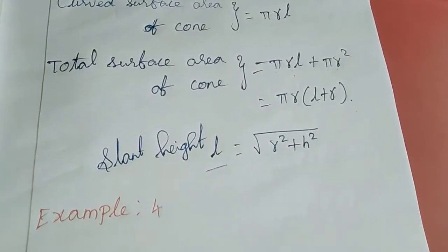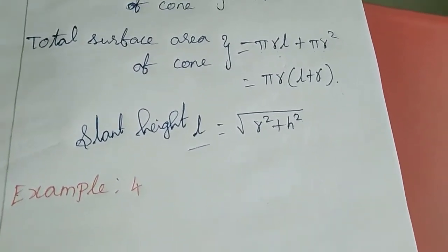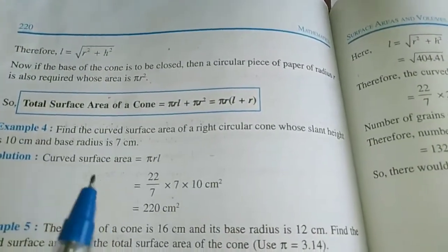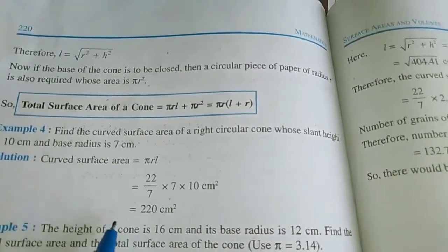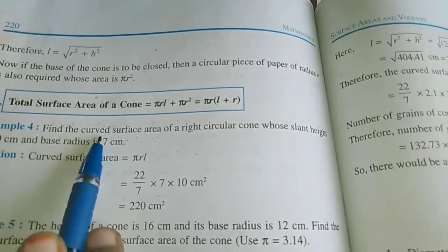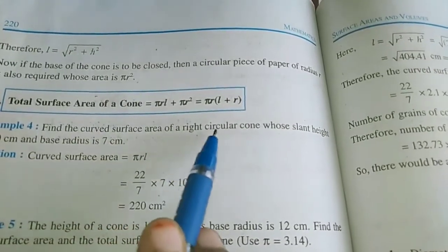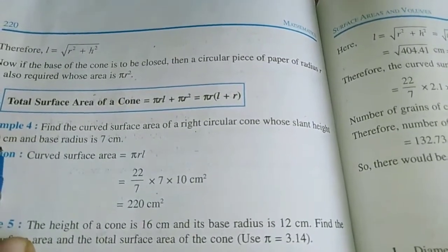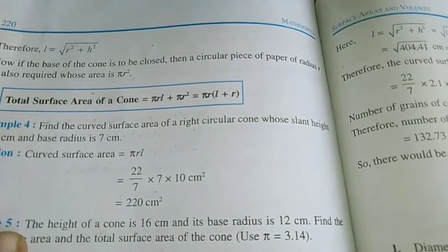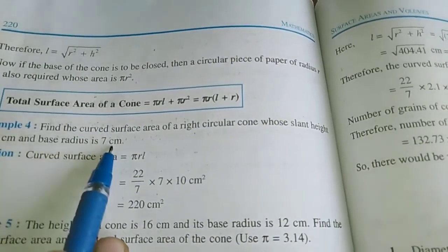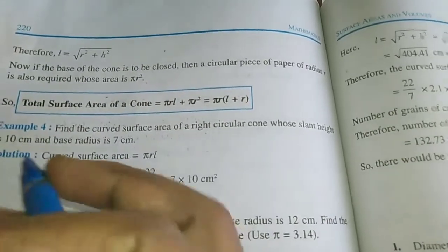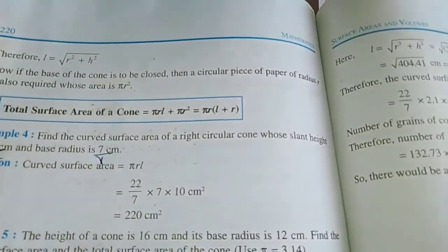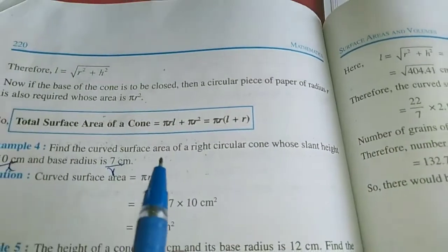Now we will move to example sums, example 4 first. Find the curved surface area of a right circular cone whose slant height is 10 centimetres. Slant height means this is the l value, and base radius r is 7 centimetres. That is l is 10 centimetres and r is 7 centimetres. They are asking for the curved surface area.